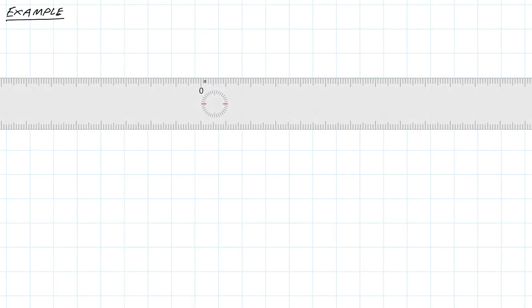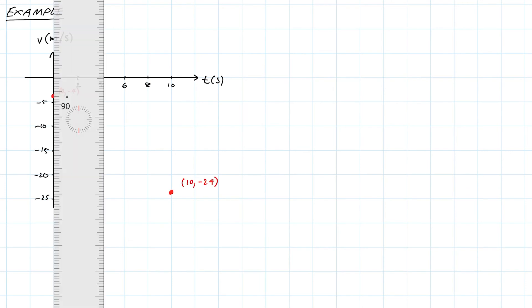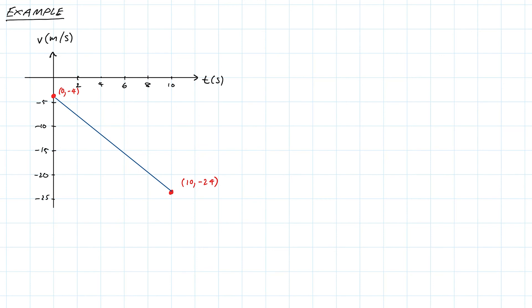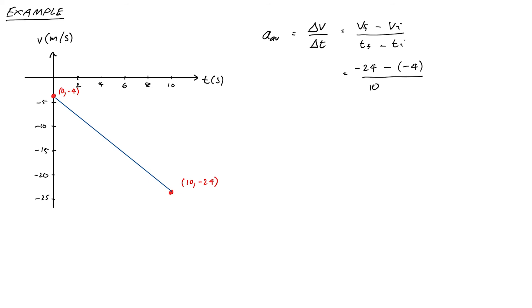Just like we worked out velocity from displacement, we can work out acceleration as the slope of the velocity time graph. Quick example: initial time = 0, final time = 10 s, velocity starts at −4 m/s and finishes at −24 m/s. Average acceleration = ΔV/ΔT = (−24 − (−4)) / (10 − 0) = −2 m/s².